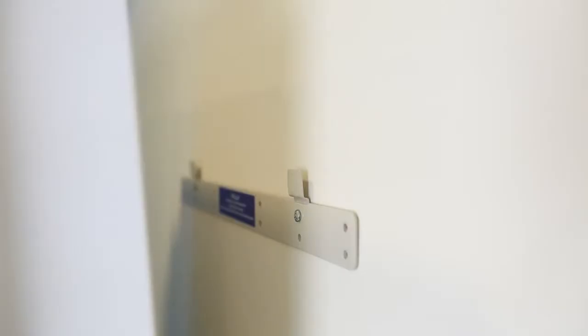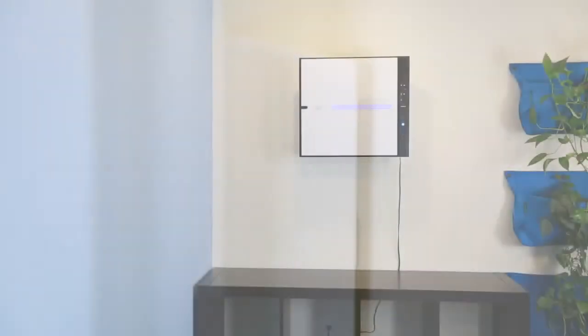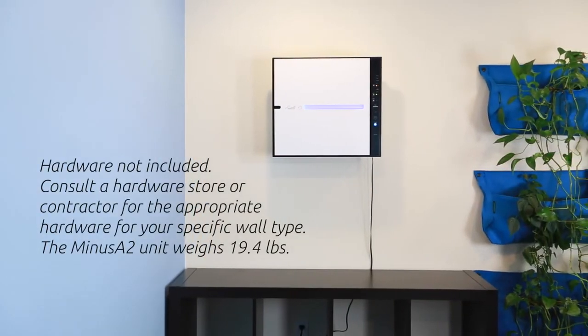Slowly slide the Minus A2 down onto the wall mount bracket, making sure to keep it steady. Once it is sitting securely on the wall, you can turn it on and start enjoying clean, fresh air.